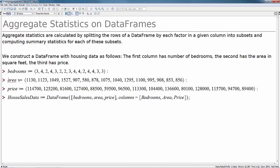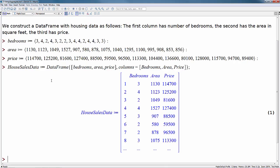The second column has the area in square feet, and the third is the price. So we put this together into a data frame, which looks like this.